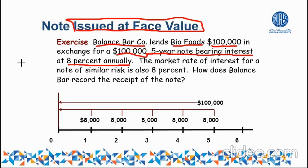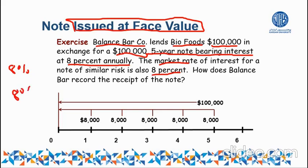If the same note receivable were issued in the market with the same level of risk as Bio Food, the market interest rate would also be 8%. So this is a contract where the contract interest rate is 8% and the market interest rate is also 8%. Because both rates are the same, we call this note issued at face.